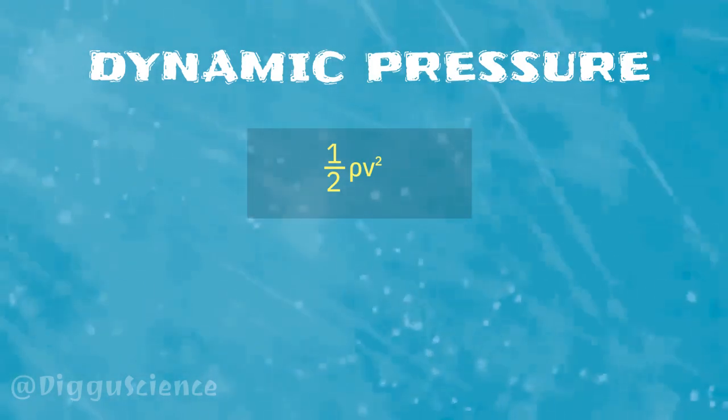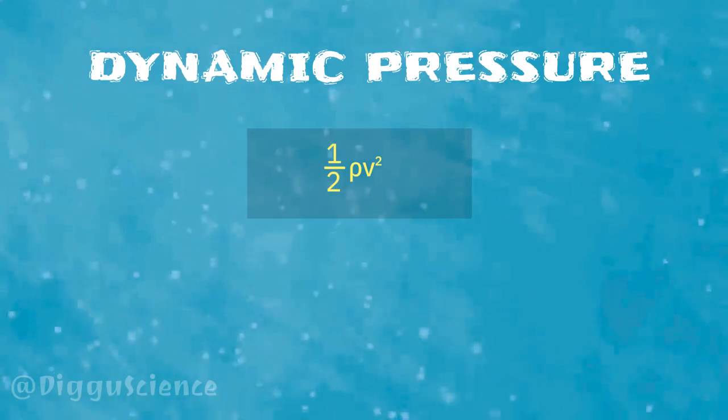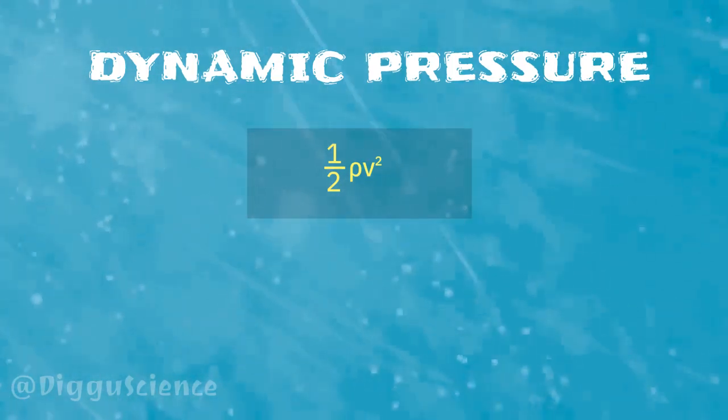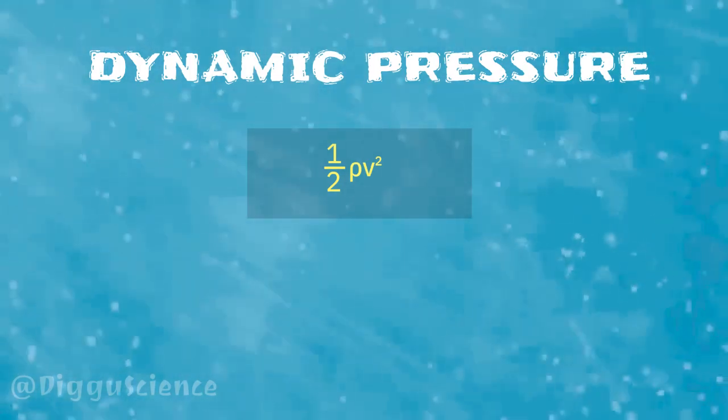However, because this equation adds up to the pressure quantity, the dimensions of half rho V squared are the dimensions of the pressure. That's why half rho V squared is known as dynamic pressure.